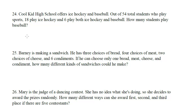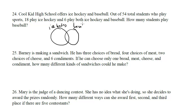Question 24: Cool Kid High School offers ice hockey and baseball. Out of 54 total students who play sports, 18 play ice hockey, and 6 play both ice hockey and baseball. How many students play baseball? This is a sets question best handled with Venn diagrams. Let's draw two bubbles — one for ice hockey, one for baseball. We're told 6 play both, so that goes in the overlapping section. The total for ice hockey is 18, which includes both groups, so the ones who play only ice hockey is 12, because 12 plus 6 equals 18.